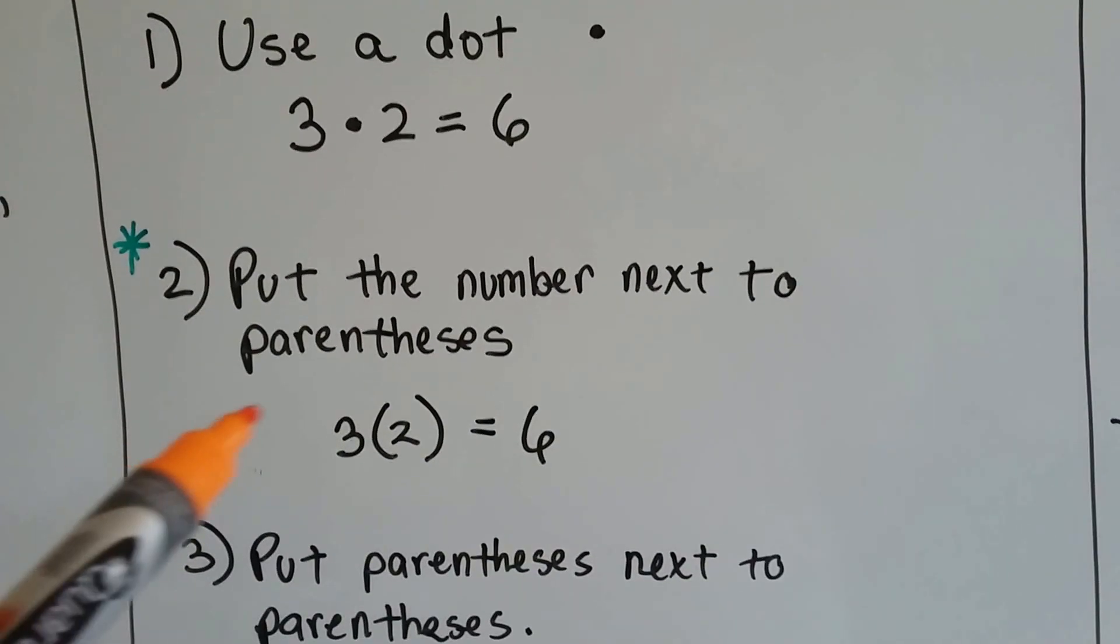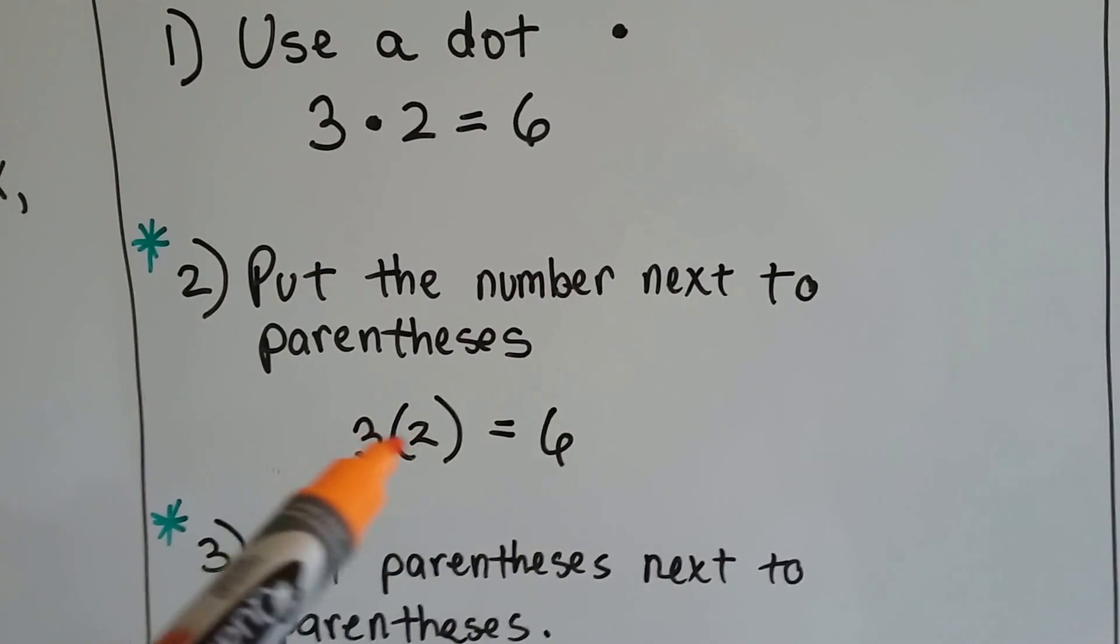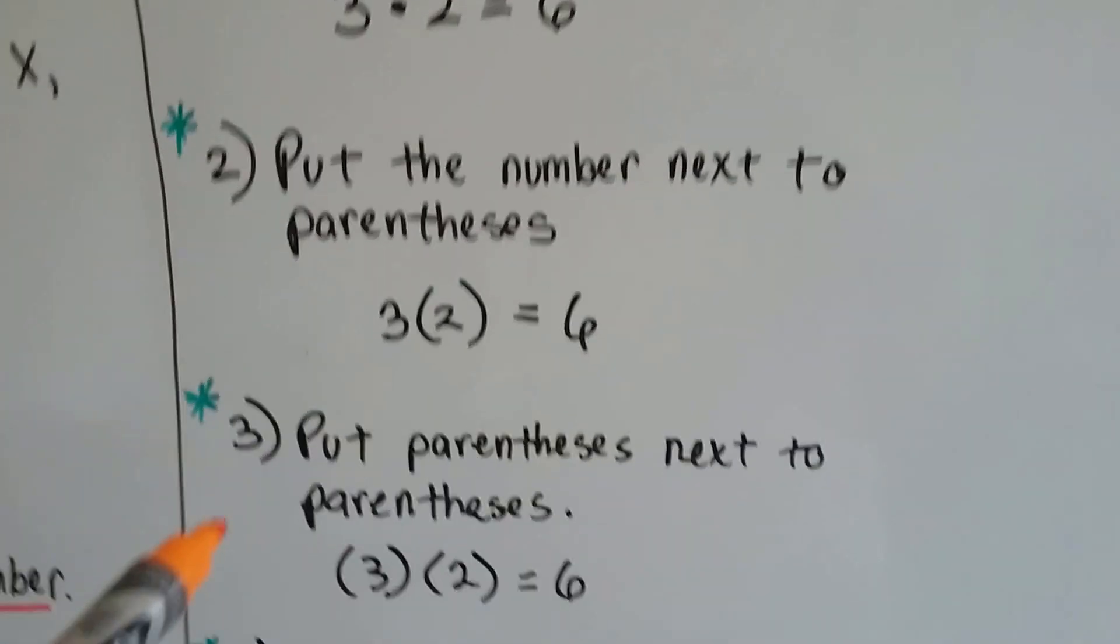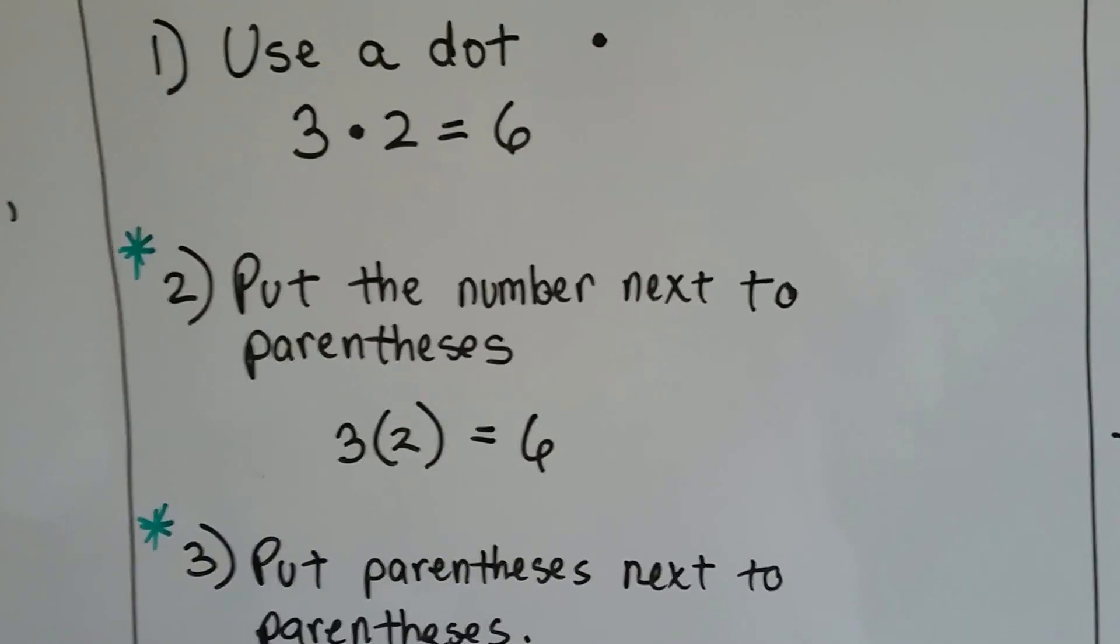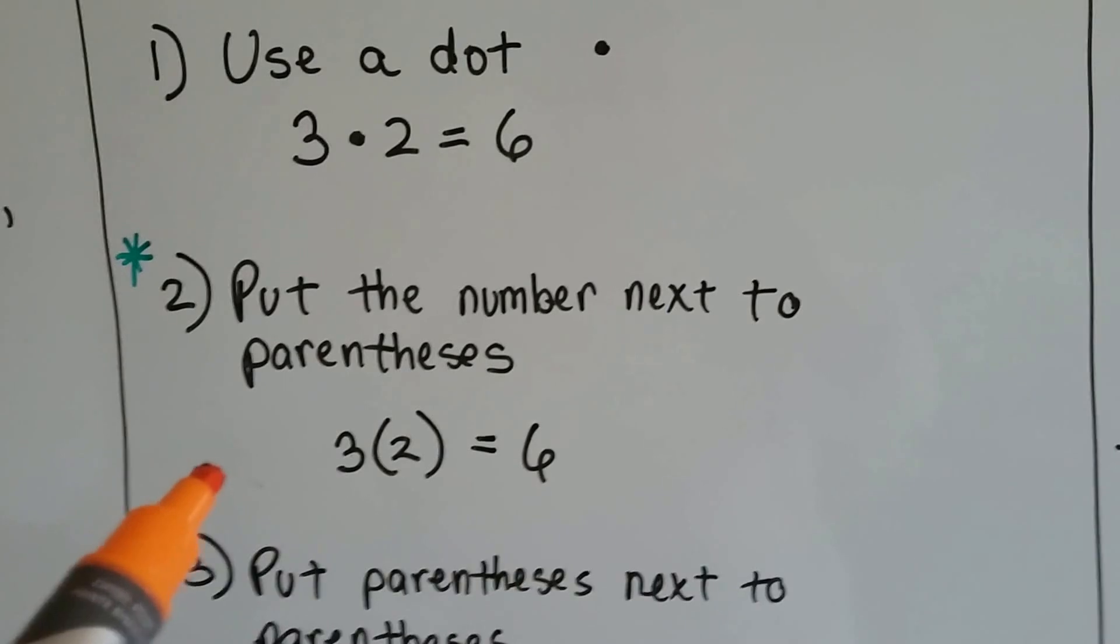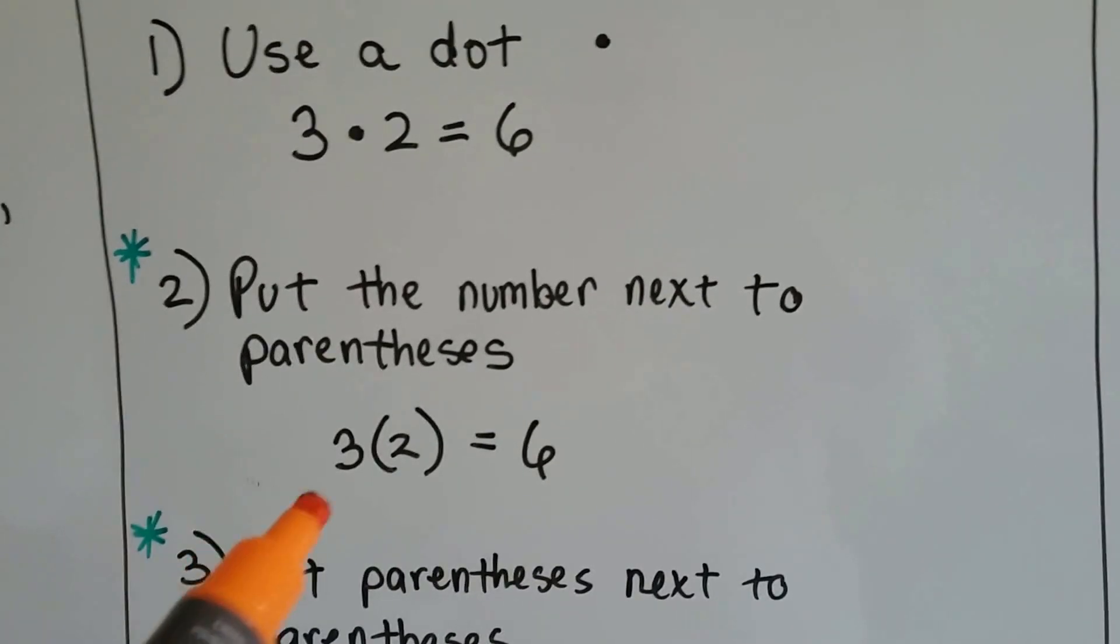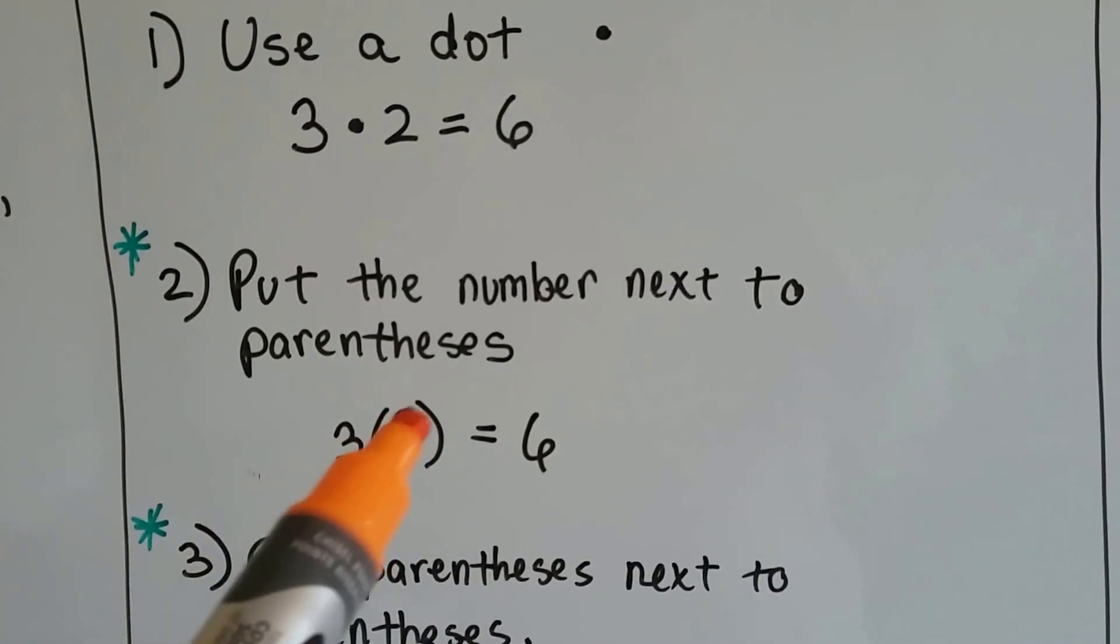You can also put the number next to parentheses to mean multiplication. Now, when you see these green asterisks, that means that's what's most widely used in algebra. And we're getting deeper into algebra, so you need to know this. So, no more x. That's a variable. So, just put it next to the parentheses.